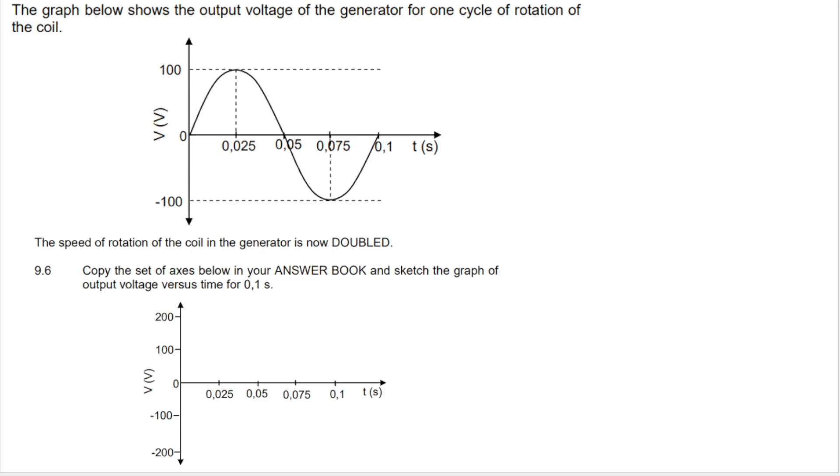For our last question, 9.6, remember this up here was given in the question. This was the original question. Then they state the following, the speed of rotation of the coil in the generator is now doubled. Very important. Speed of rotation is now doubled. Copy the set of axes below in your answer book. So they're referring to this. And sketch the graph of output voltage versus time for 0.1 seconds. So can you see that the original graph here, starting here and ending here, that represents one full rotation of the coil.